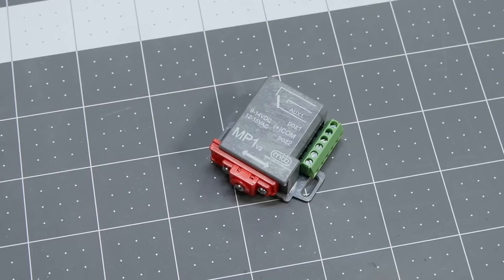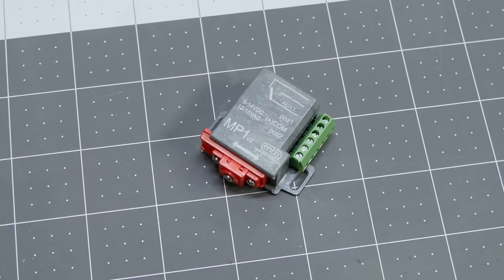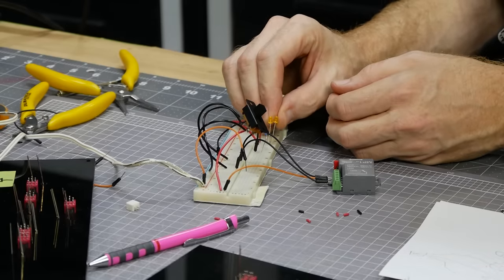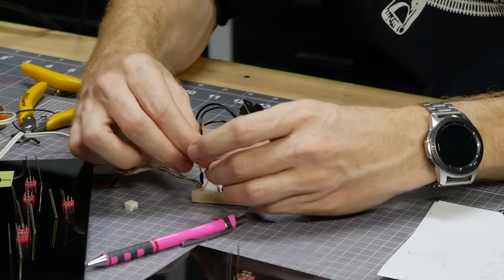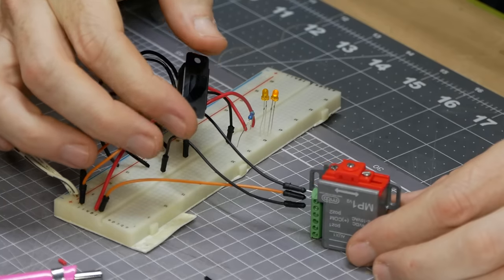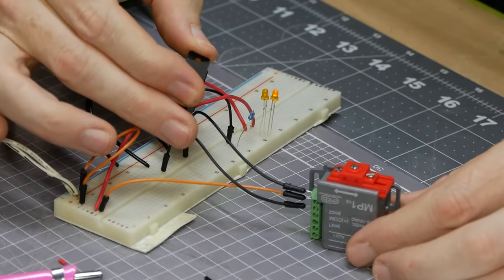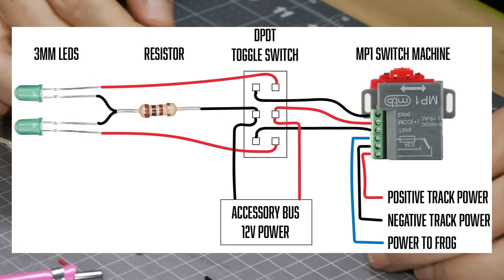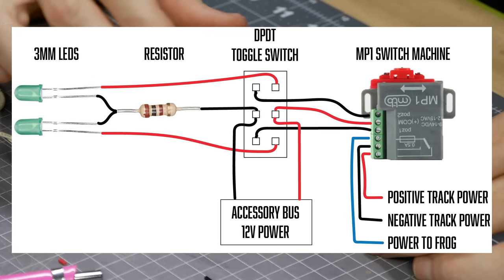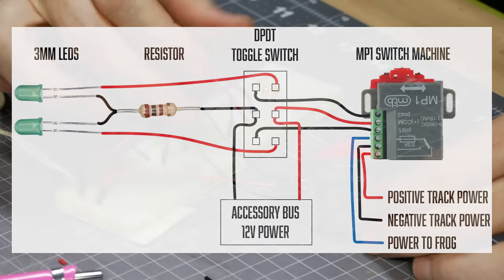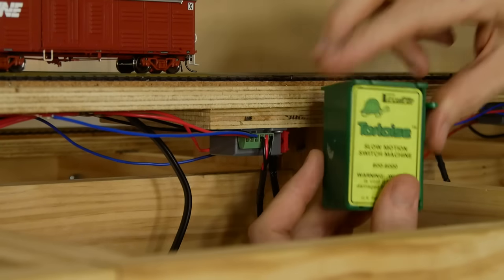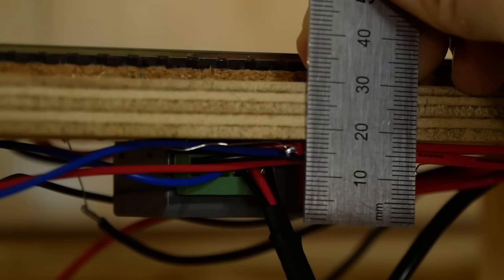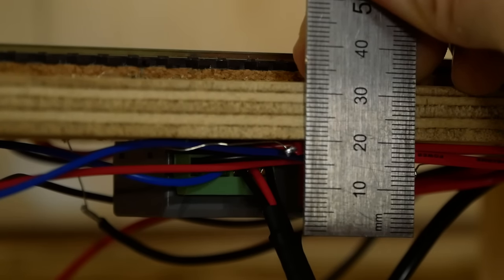For the switches I'm using an MP1 version 2 point motor from mtpmodel.com. These are actually wired somewhat differently to the more common tortoise and cobalt switch machines. I actually think they are a bit easier to wire. I won't go through in detail how to wire them however here is a wiring diagram to show you how the wiring is laid out should you want to replicate this type of control panel with these switch machines. I specifically chose these for the very low profile they have. I didn't have enough space between the sub road bed and the bench work frame to fit larger tortoise switch machines.